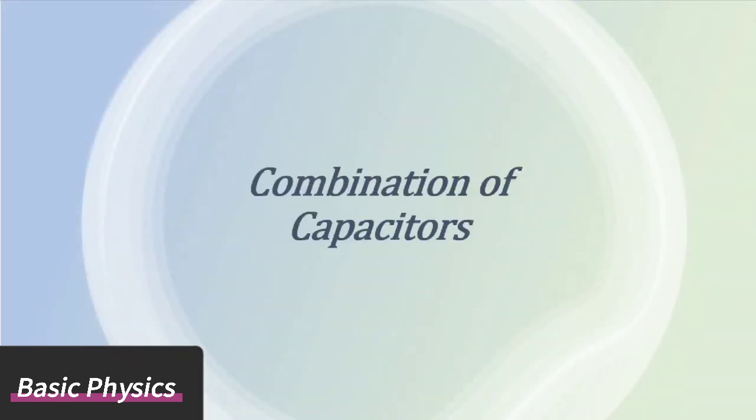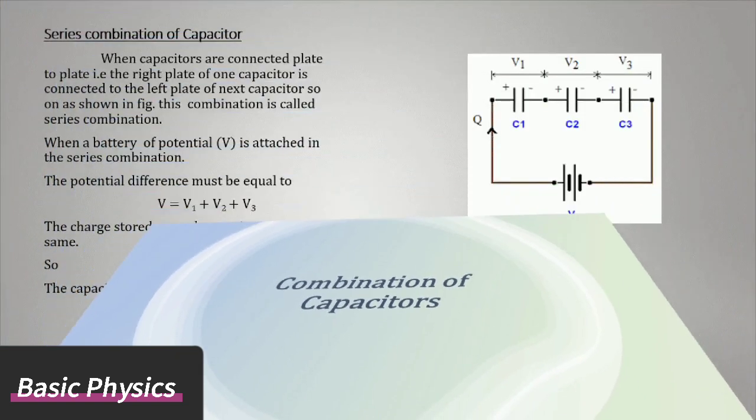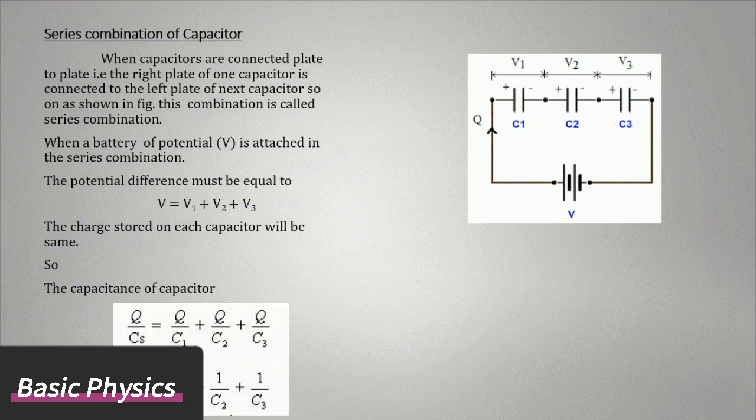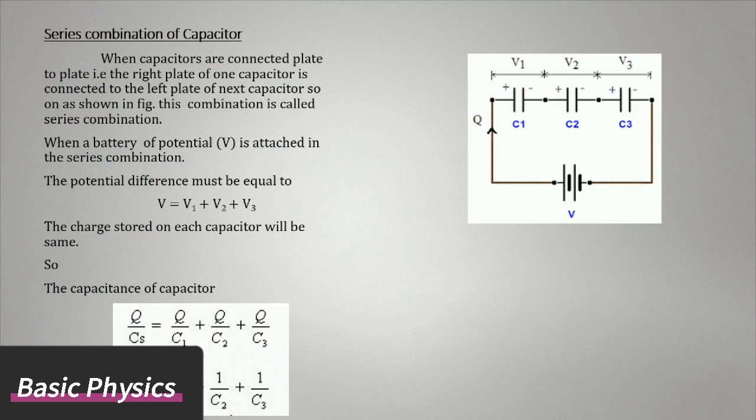Combination of capacitors: Series combination of capacitor. When capacitors are connected plate to plate, the right plate of one capacitor is connected to the left plate of next capacitor, and so on as shown in figure. This combination is called series combination.